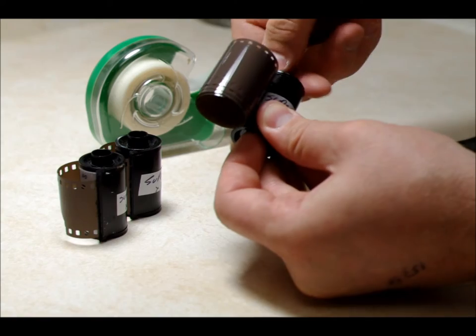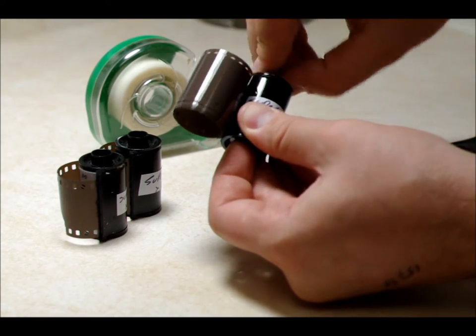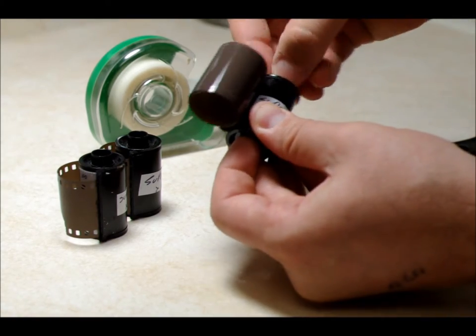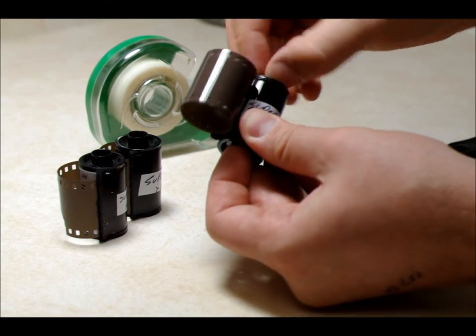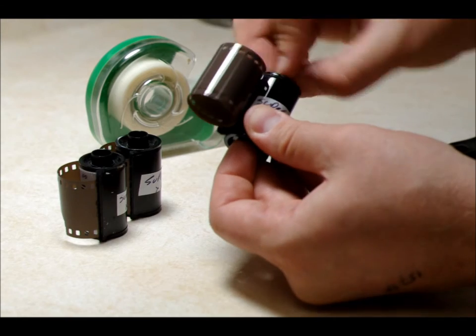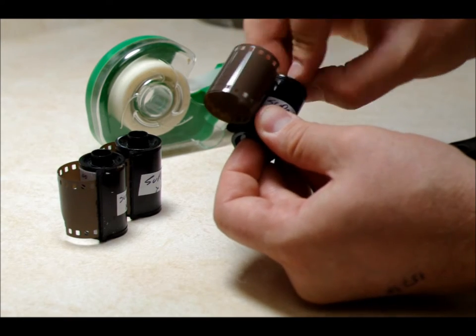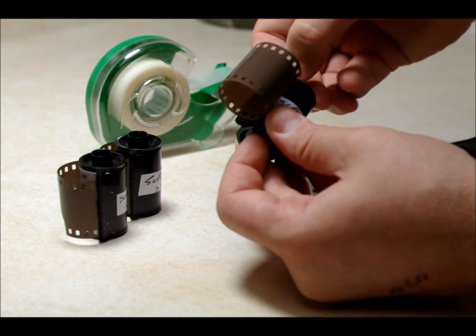One thing to bear in mind, this is really a color technique. With black and white, you're not really going to get the same effect because black and white doesn't have emulsion layers in the same way that color film does. So putting black and white film in backwards isn't going to give you suddenly a red scale image.